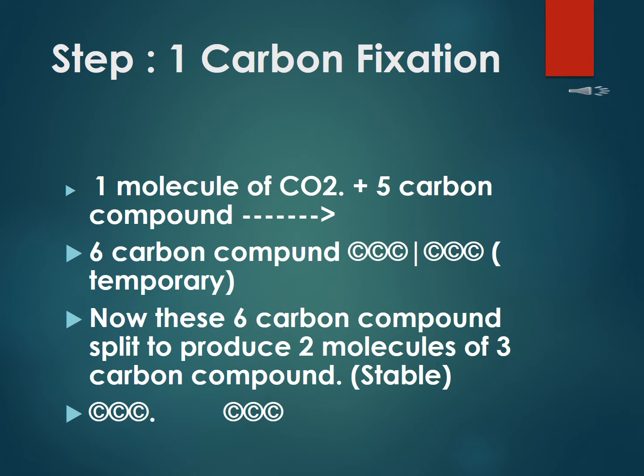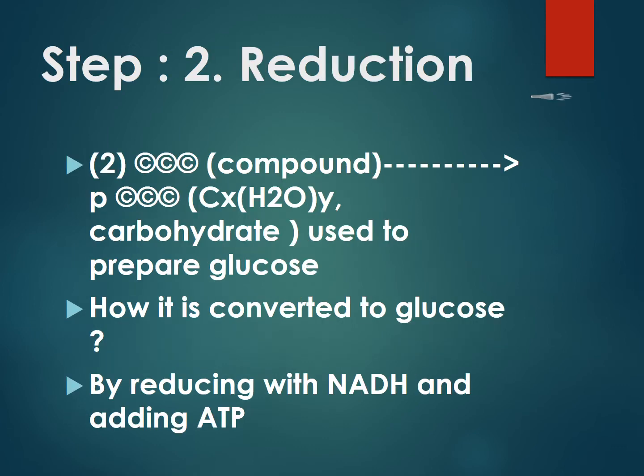The second step is reduction. There are two molecules of the three-carbon compound present. These are reduced with the help of NADPH into carbohydrate. This carbohydrate is then used to prepare glucose, the final product of dark reaction. ATP gives phosphate to these three-carbon compounds in this reduction step.